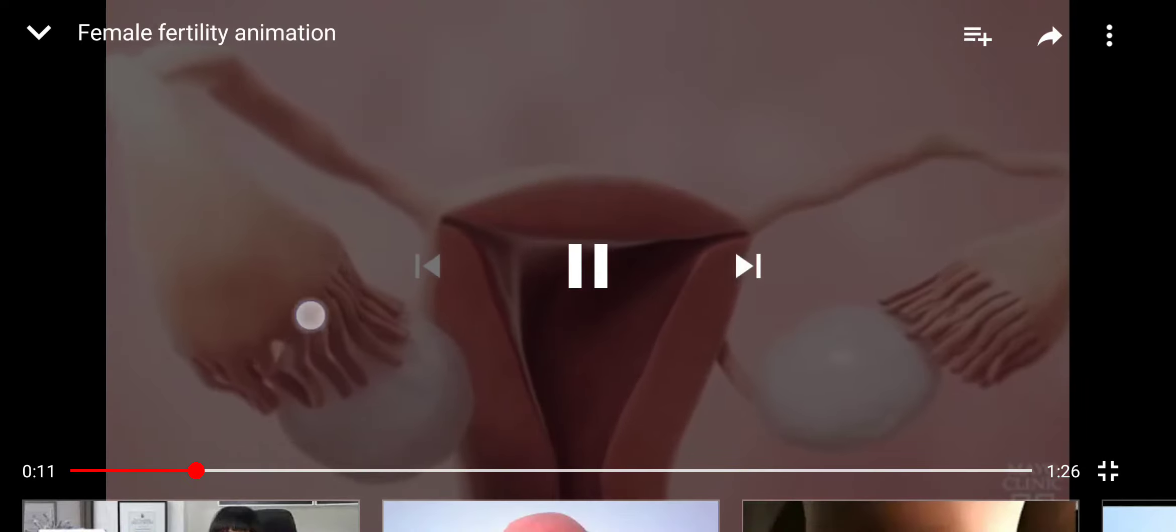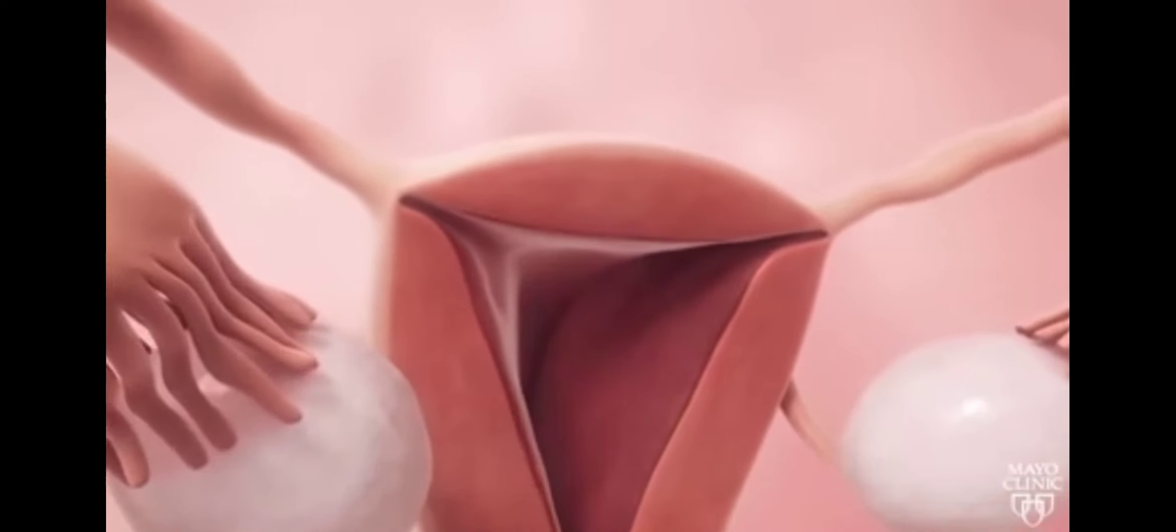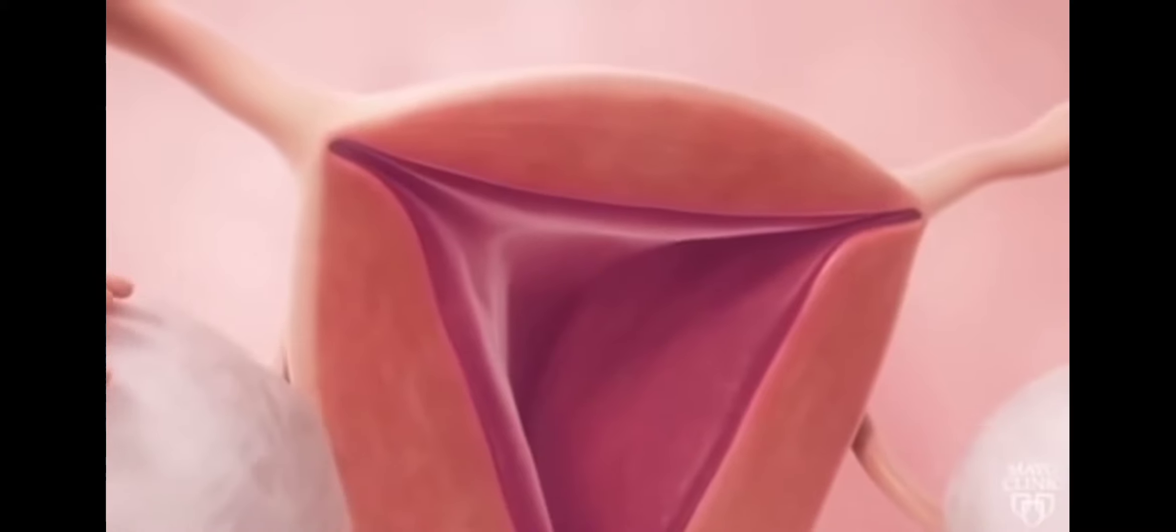In preparation for ovulation, the lining of the uterus, or endometrium, thickens. The pituitary gland in the brain stimulates one of the ovaries to release an egg.